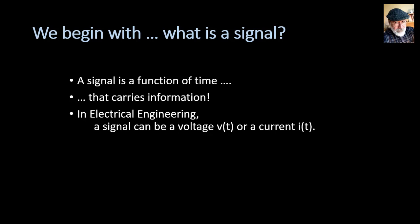In electrical engineering, a signal can be a voltage V(T) or a current I(T). But those are not the only kinds of signals. For instance, if we were to measure the air pressure near my mouth right now and plot that as a function of time, that function — air pressure as a function of time — would be a signal. It is a function of time, and it carries information: my voice.